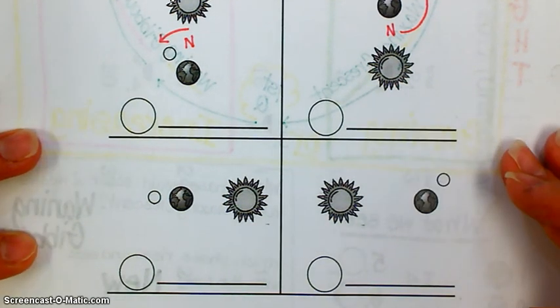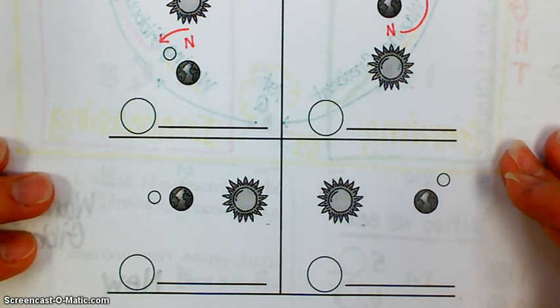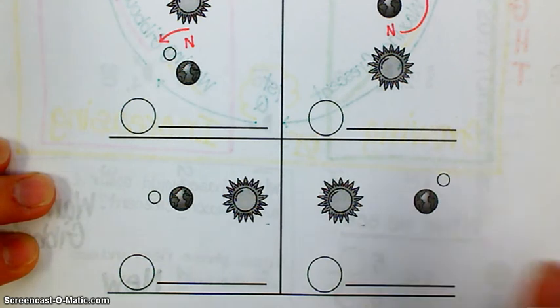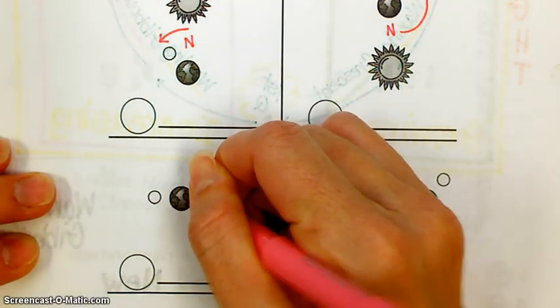The bottom two. Where is new moon? Y'all should get tired of answering this because the answer is the same every time. Where's new moon? Everybody. Between the earth and the sun. So let's mark it. New moon.